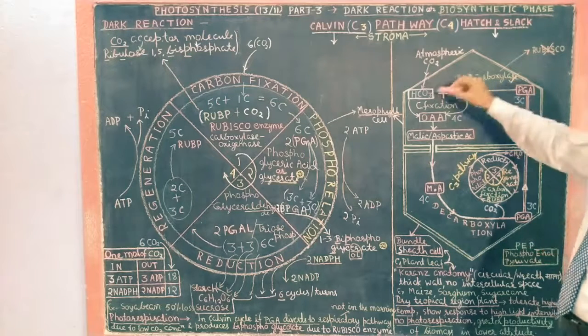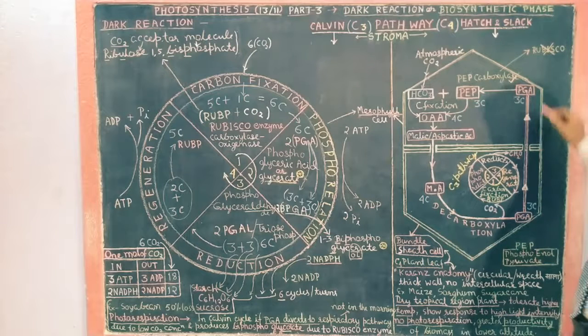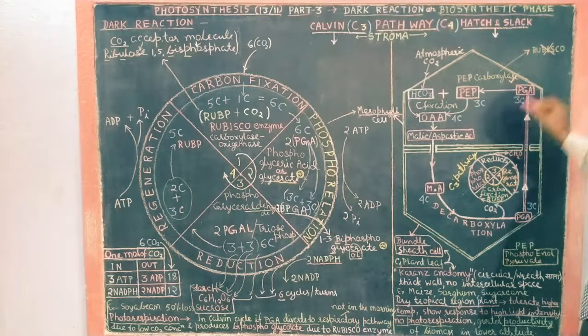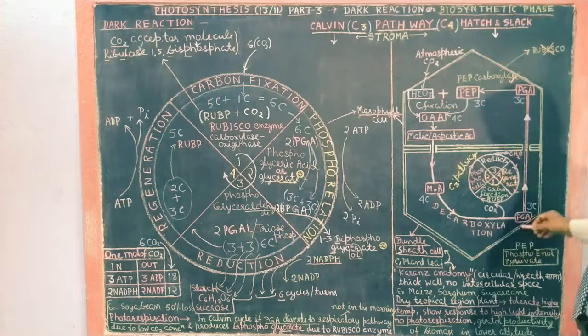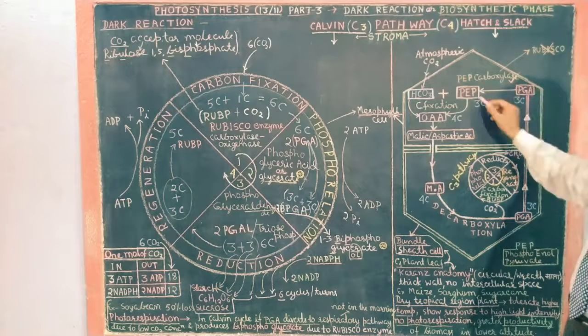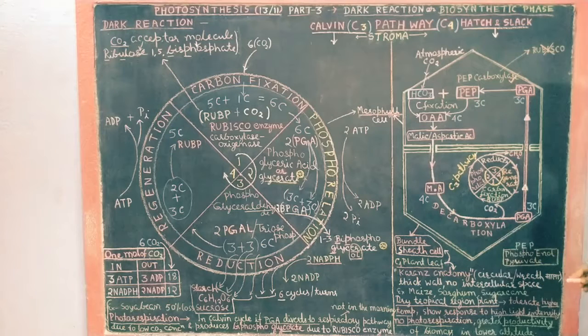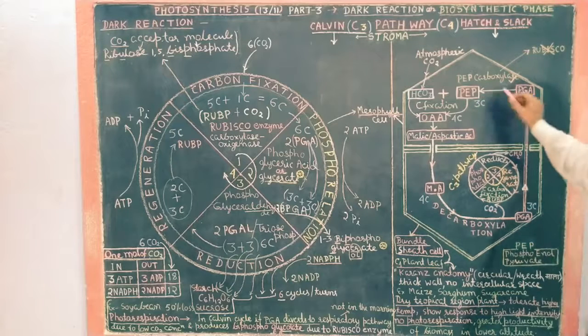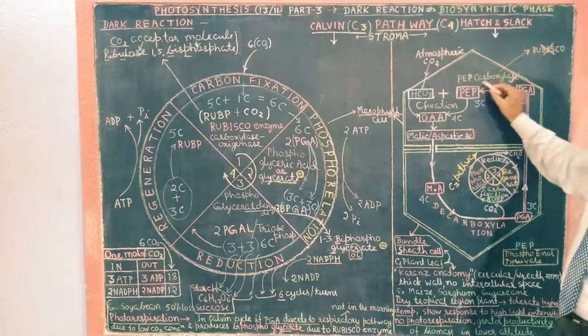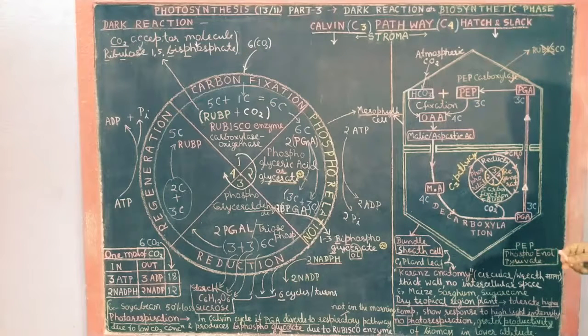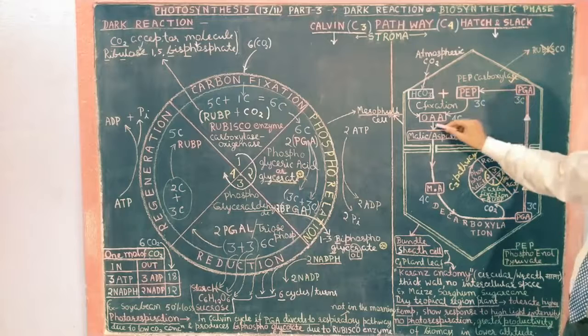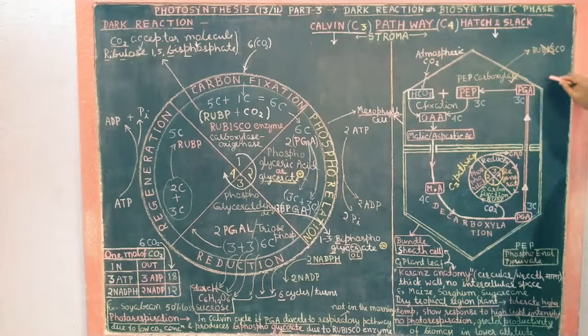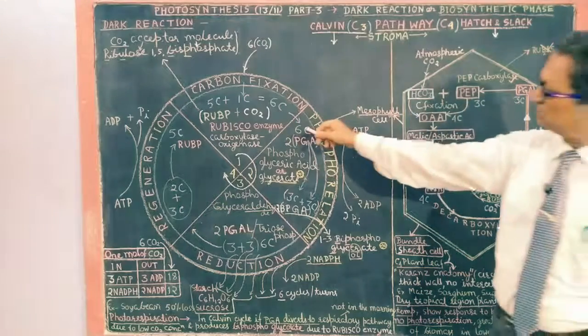C4 plant includes an additional process that is called Hatch and Slack pathway. This thing here, see what is phosphoglycerous acid here, just transportation here, decarboxylation, and PGA phosphoglycerous acid becomes PEP, phosphoenolpyruvate. Why? Because this enzyme is PEP carboxylase. This carboxylase is present which is organistic.